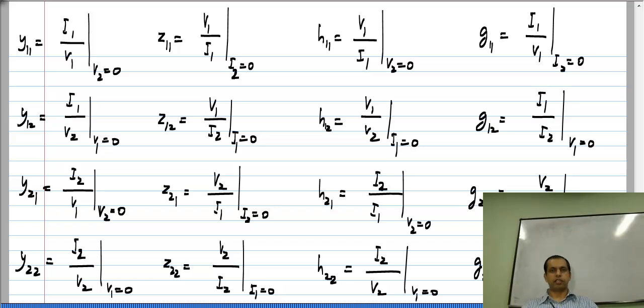If you rearrange so that you have voltages as functions of currents I1 and I2, you get the Z parameter set.